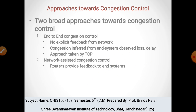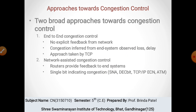The second approach is network-assisted congestion control. In this approach, the router provides feedback to end systems about whether the buffer is full or free. A few bits indicate congestion at the router side — a single bit indicating congestion. Examples include SNA, DECnet bit, TCP/IP ECN, and ATM. The router can also send an explicit rate for the sender to control the packet sending rate.